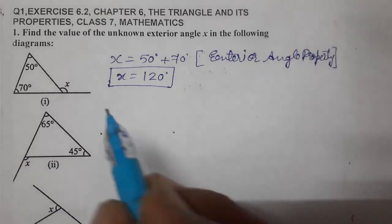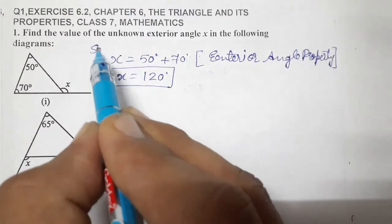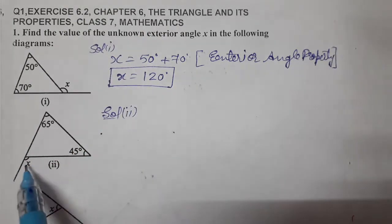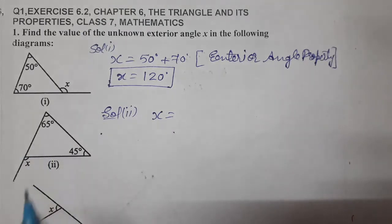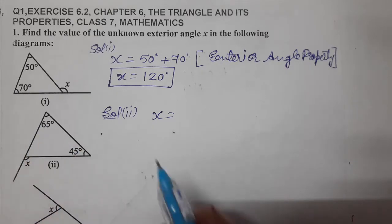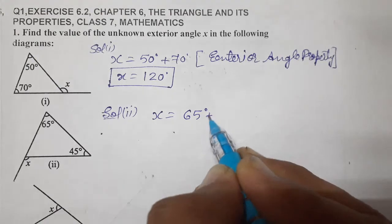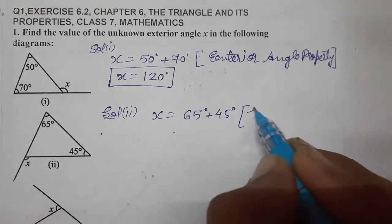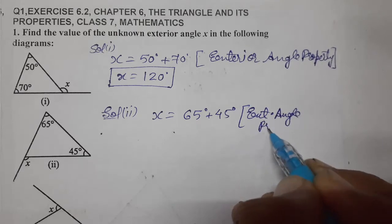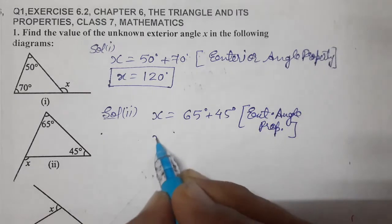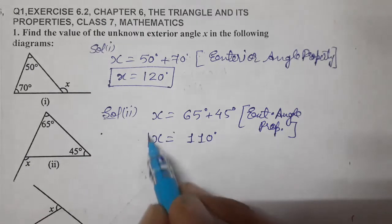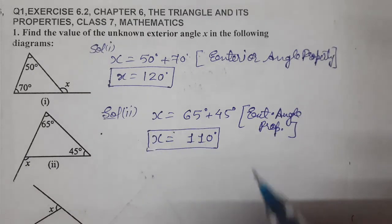Now solution two. The exterior angle here is X. If we hide the exterior angle side, the interior opposite angles are 65° and 45°. So X equals 65° plus 45°, and the reason is the same — exterior angle property. Therefore X equals 110°.